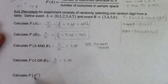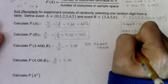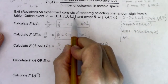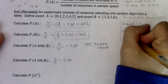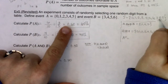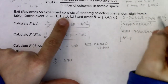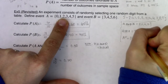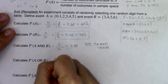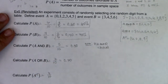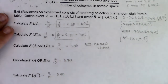Let's think about A complement — all the outcomes that are NOT in A. If 0, 1, 2, 3, 4, 5 are in A, then A complement is all the numbers in the sample space not in that list: 6, 7, 8, and 9. That ratio is 4 out of 10, which we've already calculated as 40%.